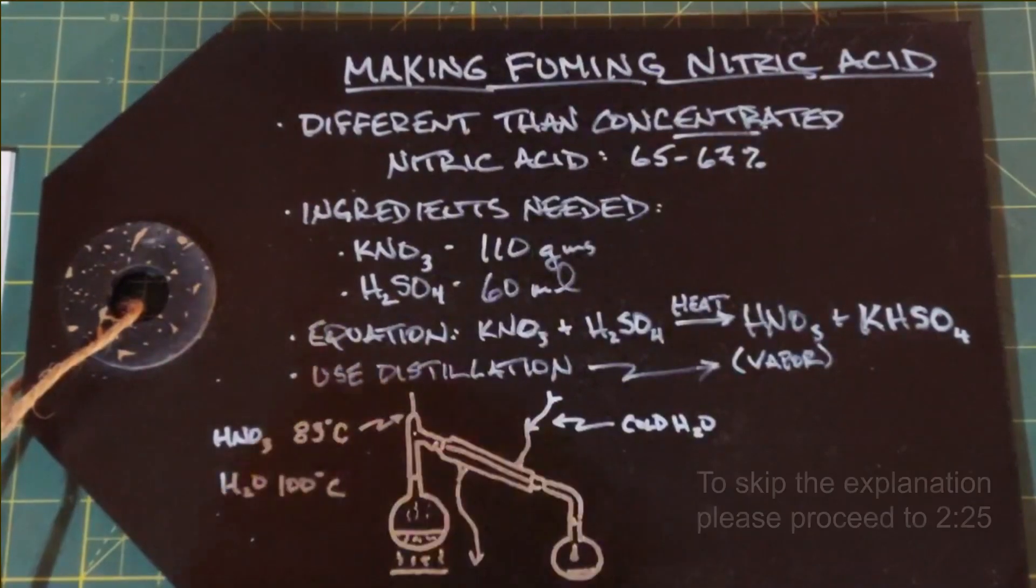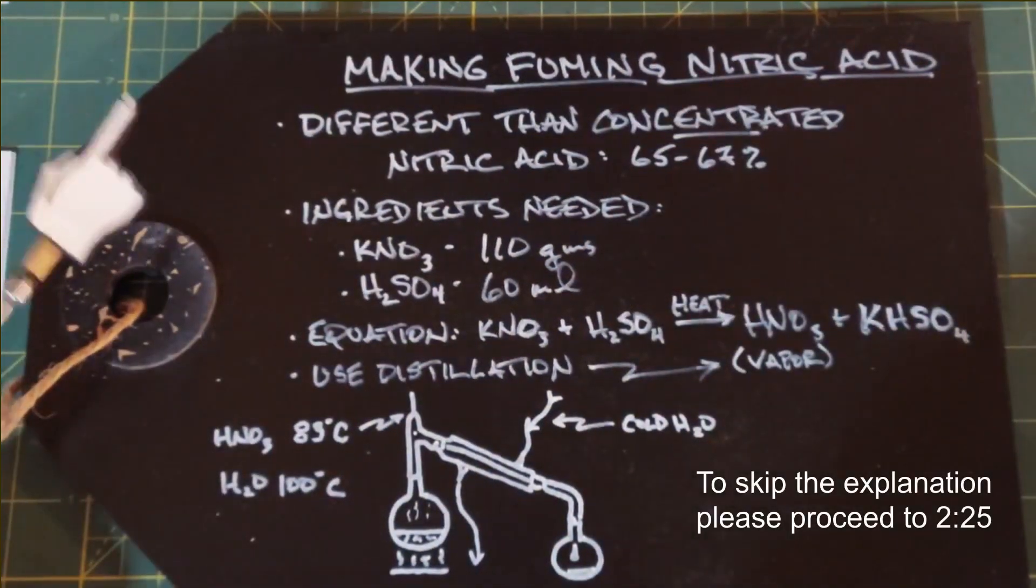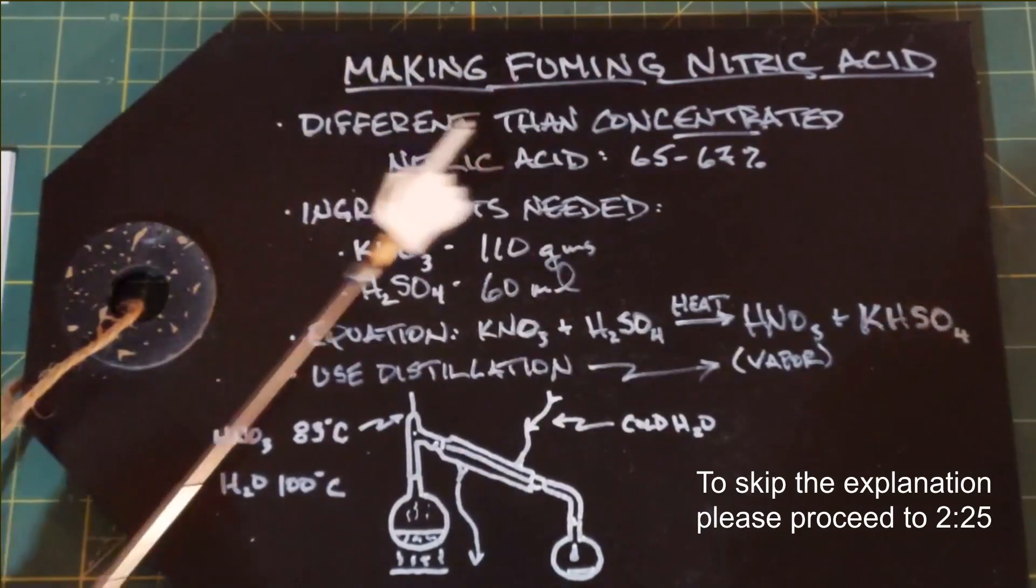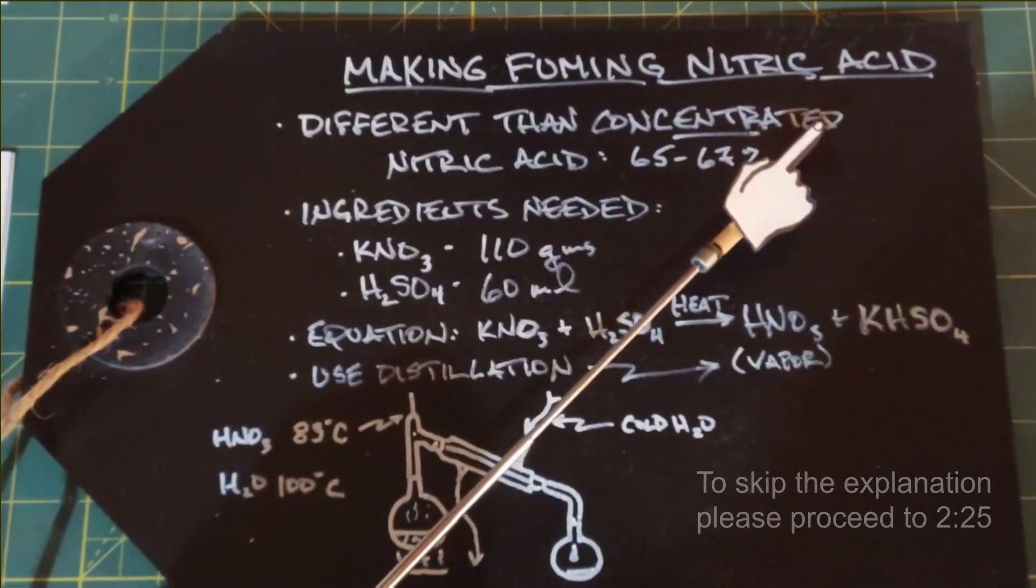In this video we're going to talk about how to make fuming nitric acid. Earlier I posted a video about how to make concentrated nitric acid, and it's a little confusing—concentrated nitric acid is actually nitric acid between 65 and 67 percent.